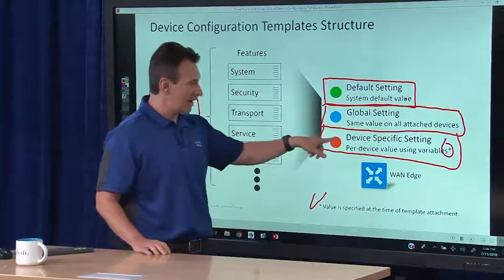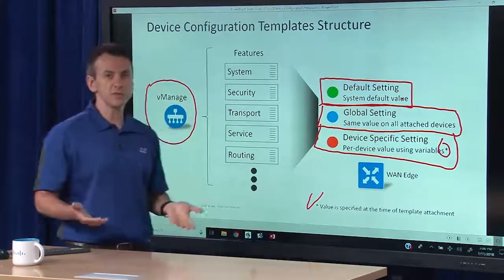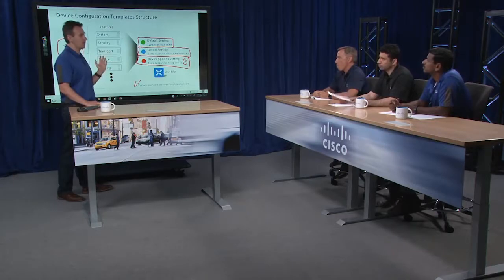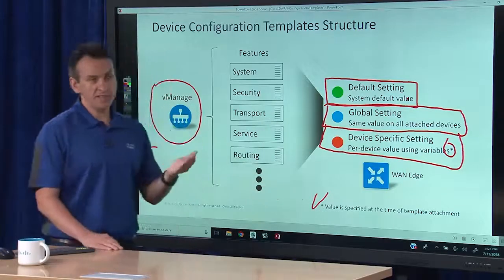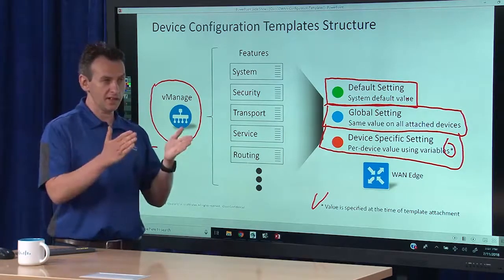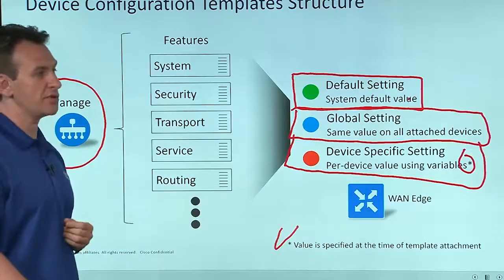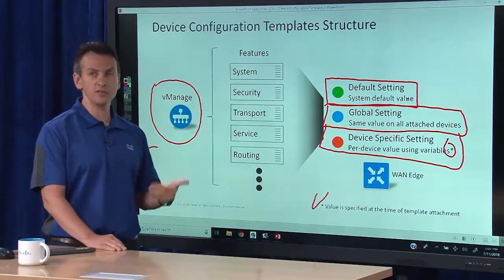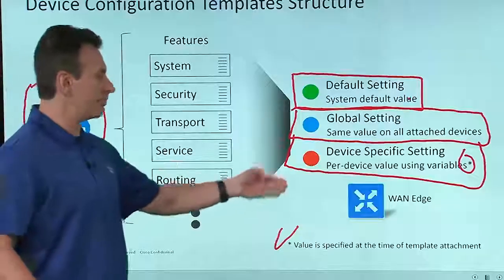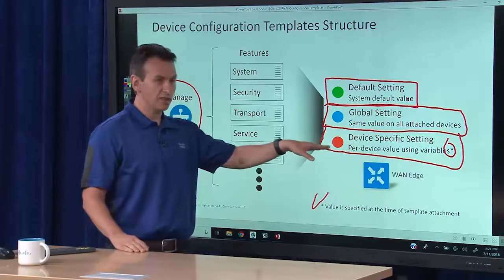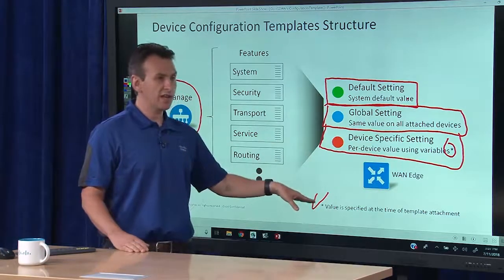Going back to device-specific settings — interface description is something that could become a variable, and IP addressing is the most common. Essentially anything can be turned into a variable. How many variables you have is really an administrative preference. If you want a common configuration across many devices and everything is an exact replica, you may end up with very few configuration templates. If you have a lot of deviations, you may end up with many device-specific settings. It really depends on how you decided to structure your configuration, but this gives you the flexibility to supply those values at the time the template is attached.